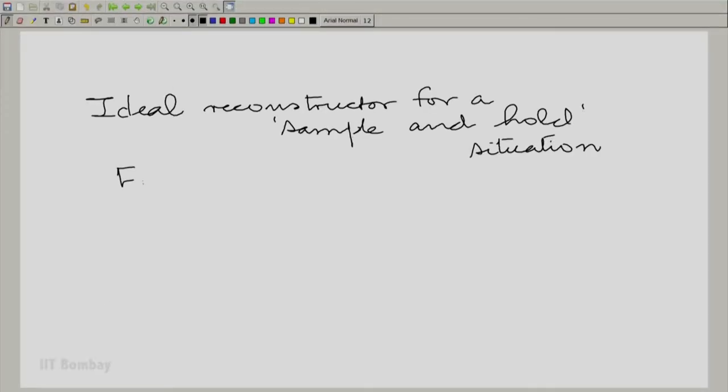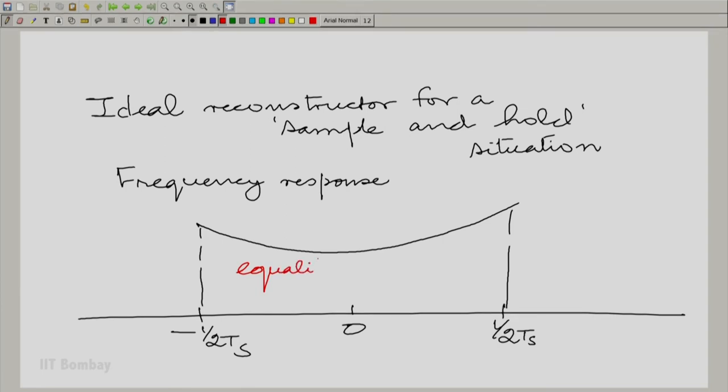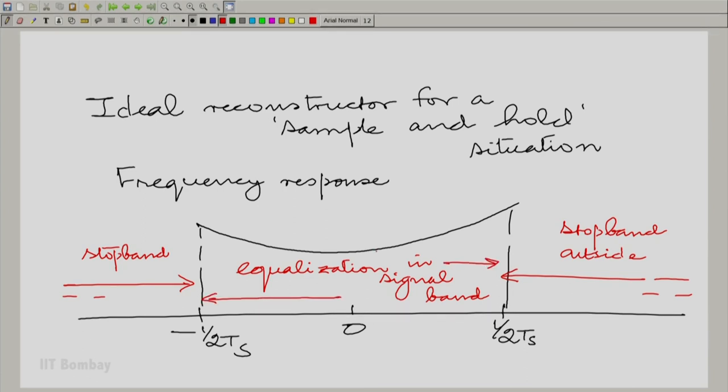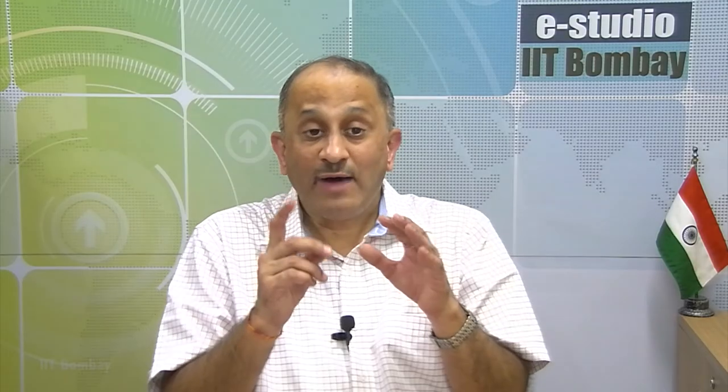The net result is that if I wish to reconstruct a signal after being sampled and held, I notionally need to do two things. I of course, need to cut out all these carbon copies, all these aliases which have been created. But together with that, I also need to equalize. Now, the ideal reconstructor. What is the ideal reconstructor for a sample and hold situation? We should write that down. The ideal reconstructor needs to do equalization in the signal band, stop band outside the signal band. And you know the nature of equalization that is required. In other words, when you have sampling and holding in the operation, the ideal reconstructor is not going to be flat in the signal band. That is what we need to understand.